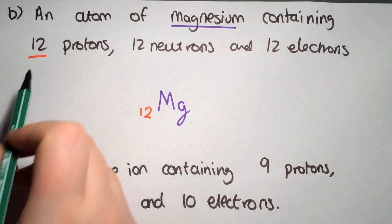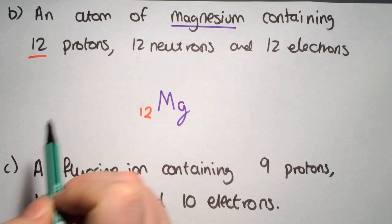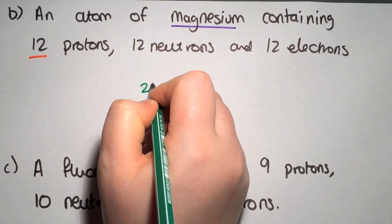And then finally our mass number. So we have 12 protons and 12 neutrons. 12 plus 12 is 24.